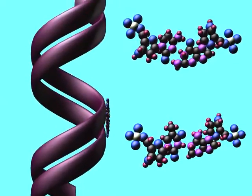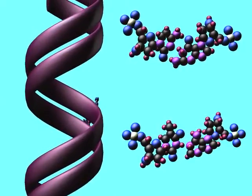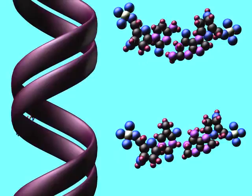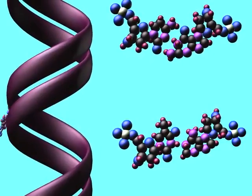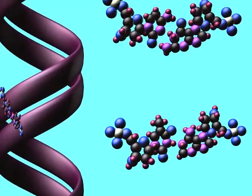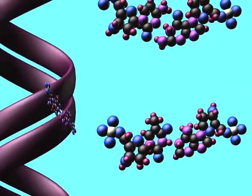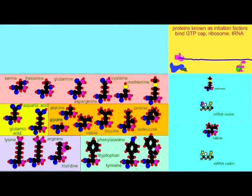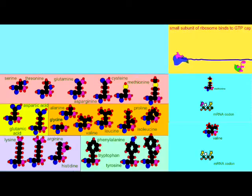Living things such as ourselves depend on nitrogen. Nitrogen is a component of the nitrogenous bases of DNA and RNA, and nitrogen is a component of amino acids. Each amino group has a nitrogen atom, and other amino acids have additional amino groups.